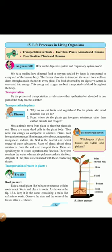Now, how does transportation occur in plants? Why do we eat fruits and vegetables? Do the plants also need minerals like we do? Yes. We eat fruits and vegetables to get minerals, essential amino acids, and all the essential minerals and micronutrients for our body. The plants also need minerals for growth. From where do the plants get inorganic substances other than carbon dioxide and oxygen? They obtain it from the soil.